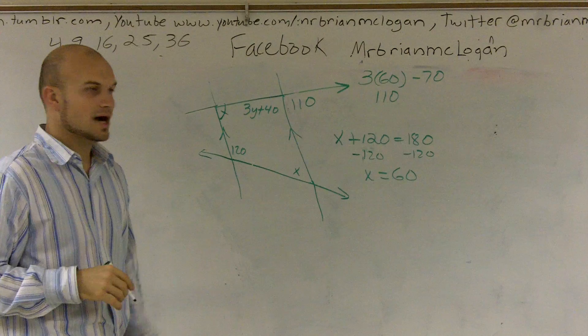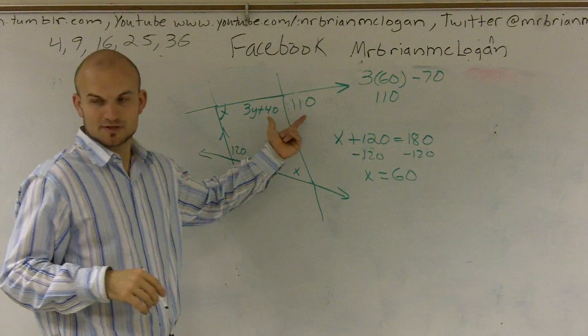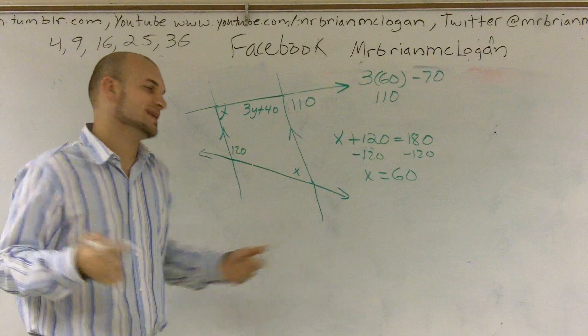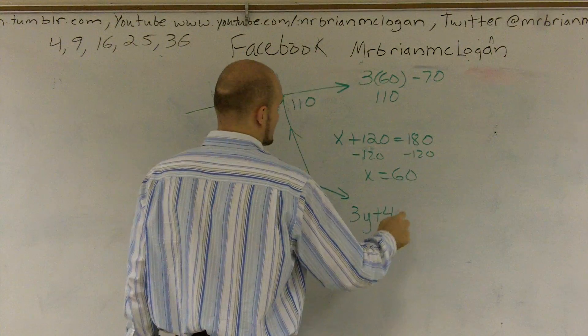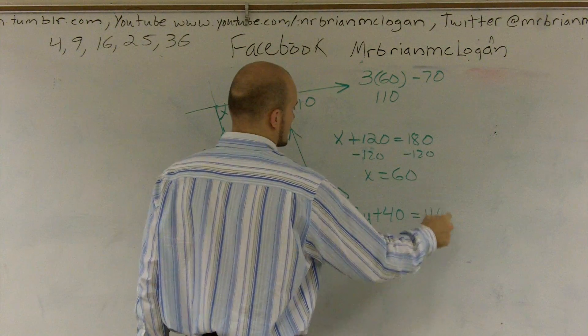All right? Now, what do you know about two angles that make up a straight line? They're supplementary, meaning they add up to 180. So I can say 3y plus 40 is equal to 110.